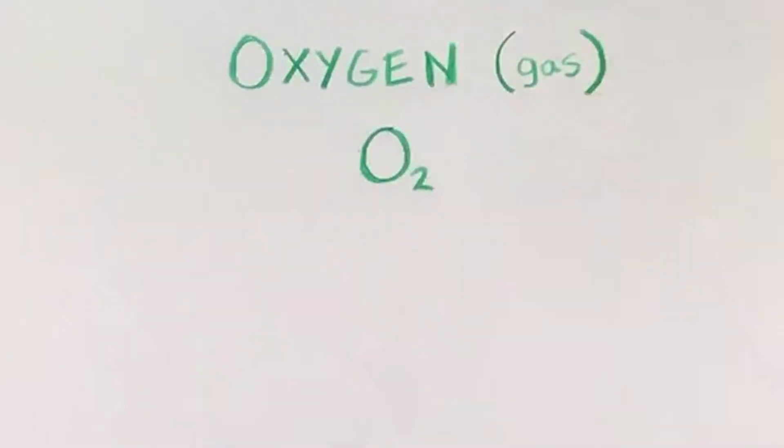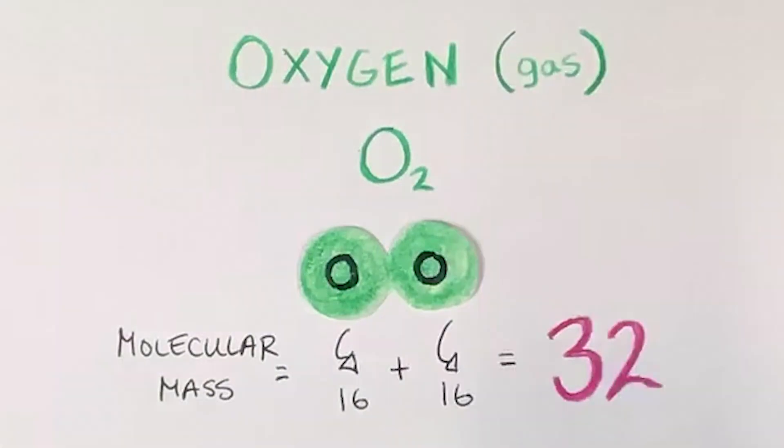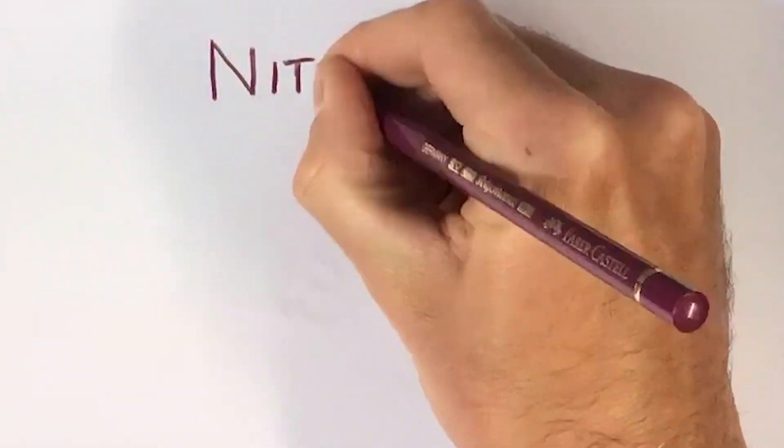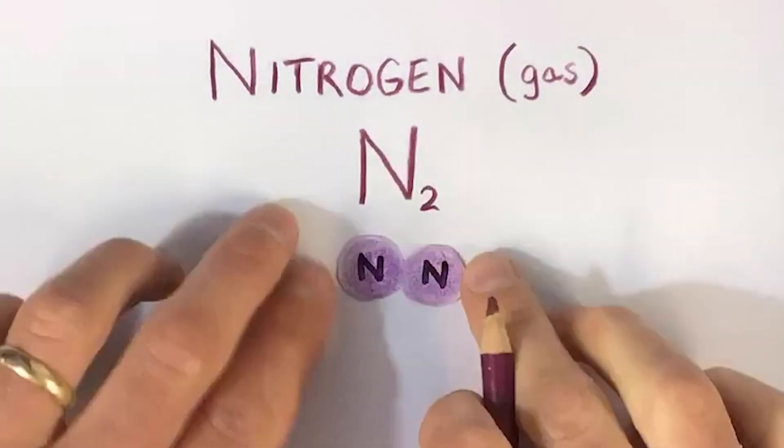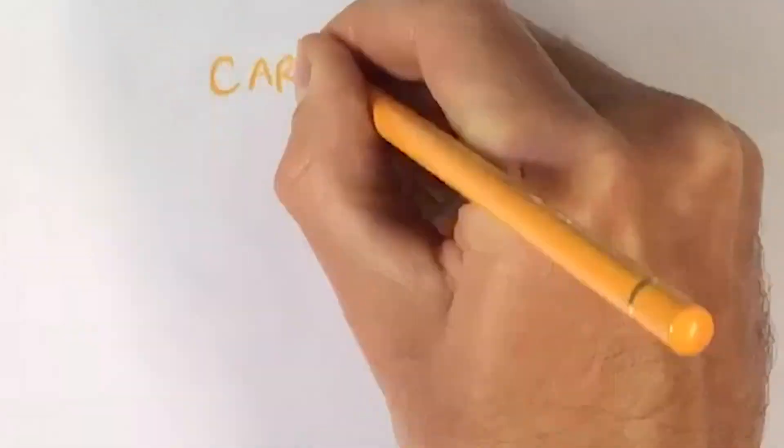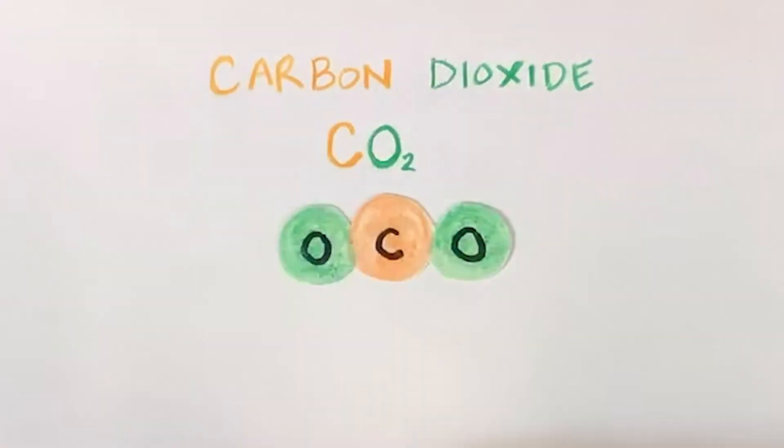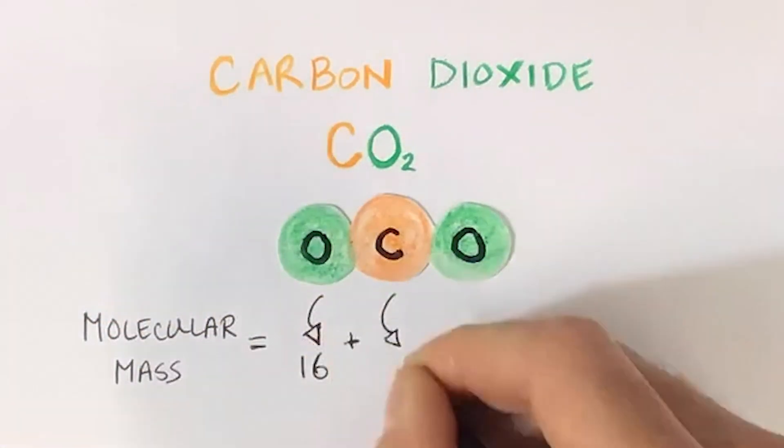Now we can apply that same math to the molecules that we're using here. Oxygen has 2 oxygen atoms, making a total of 32. Nitrogen has 2 nitrogen atoms for a total of 28. And looking at carbon dioxide, we'll see that it's the heaviest. And that's because it's made up of 1 carbon and 2 oxygens, for a total molecular mass of 44.